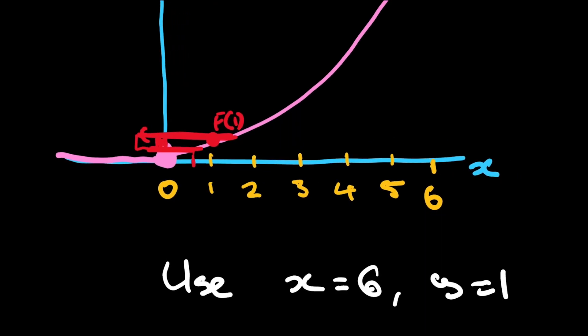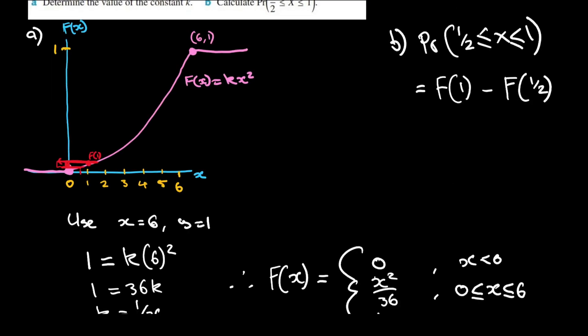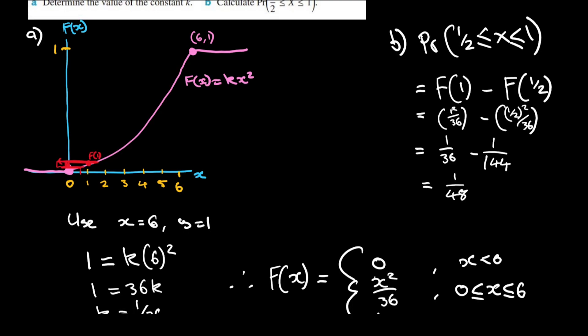It won't be exactly 0.5 or 0.3 — we find the exact probabilities by substituting into the cumulative distribution function and solving. With a bit of simplifying, the probability comes out to 1 over 48, which is approximately 0.02.